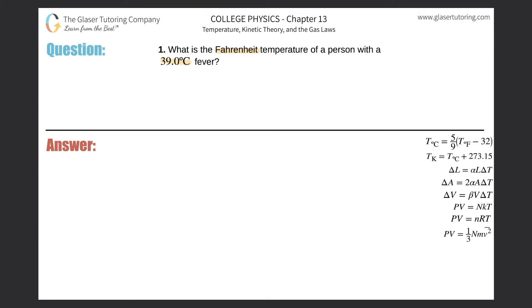So take a look on the right hand side. We have a nice little formula that will tell us how to do that. This formula relates degree Celsius to Fahrenheit. So here I'm going to write: Celsius temperature will be equal to 5 ninths multiplied by the Fahrenheit temperature minus 32.